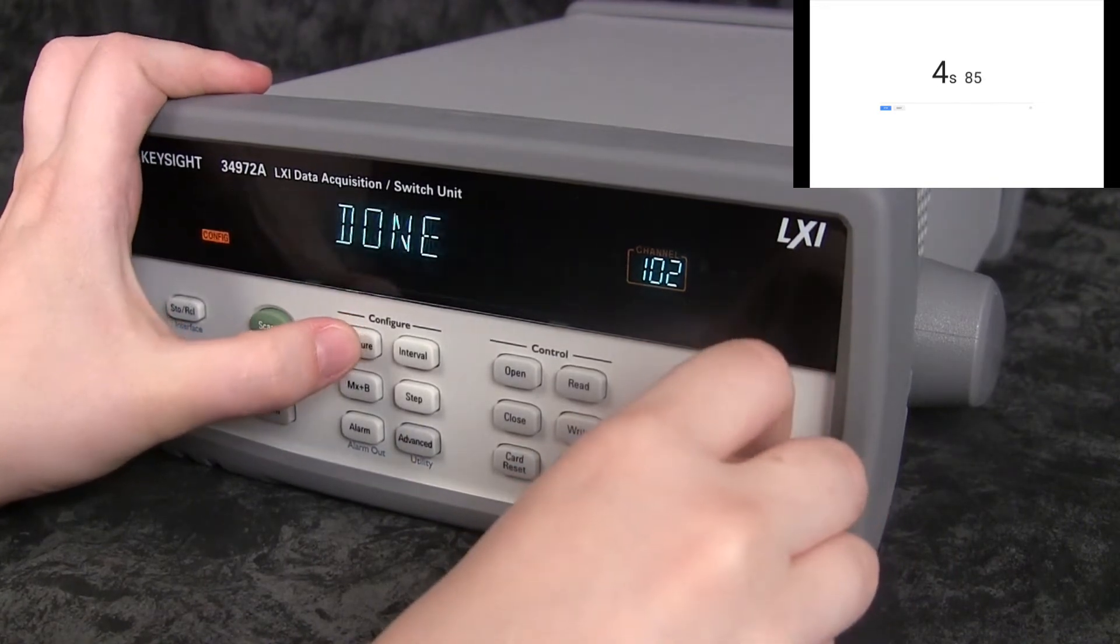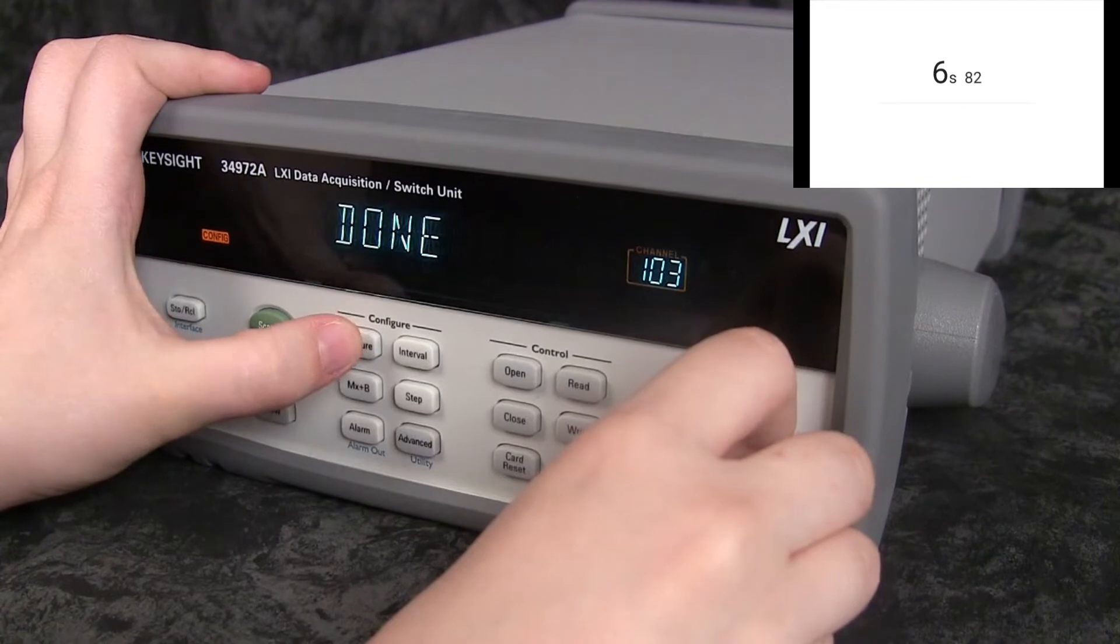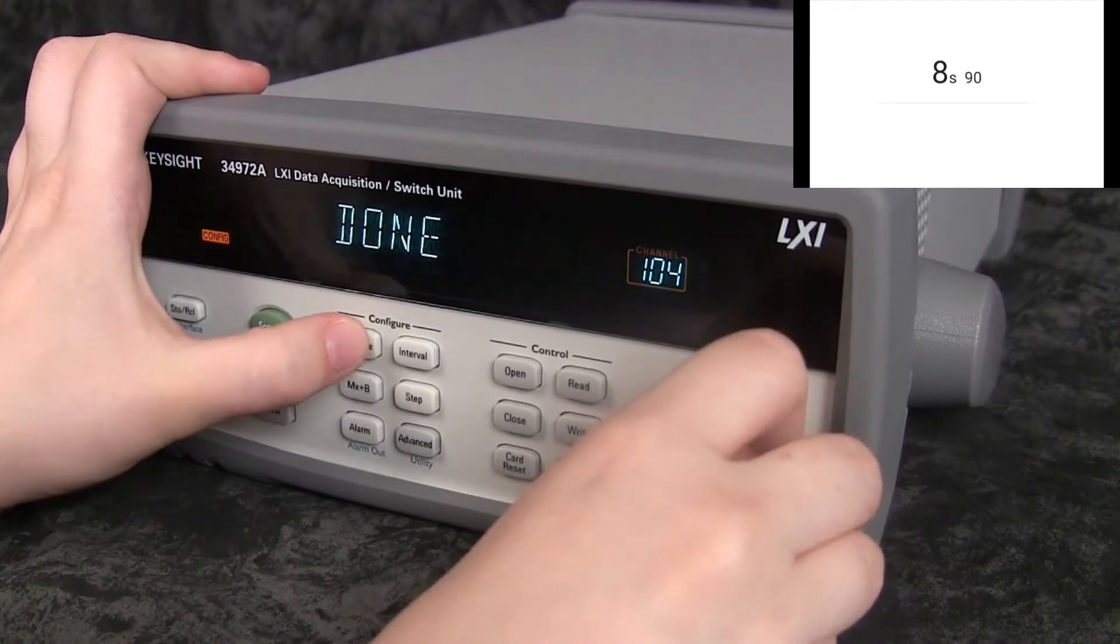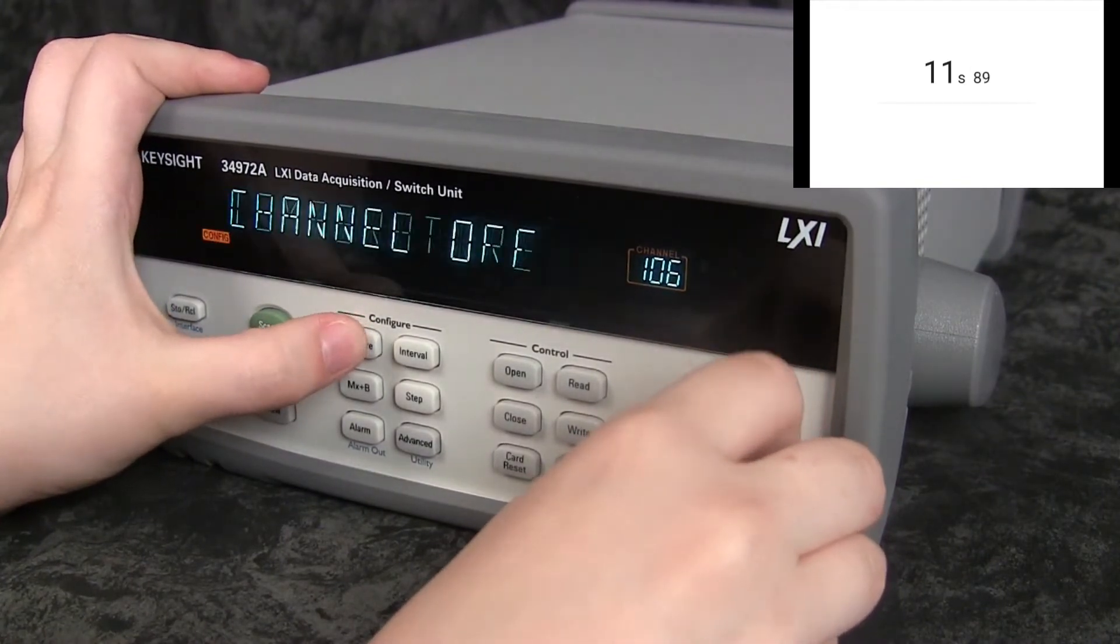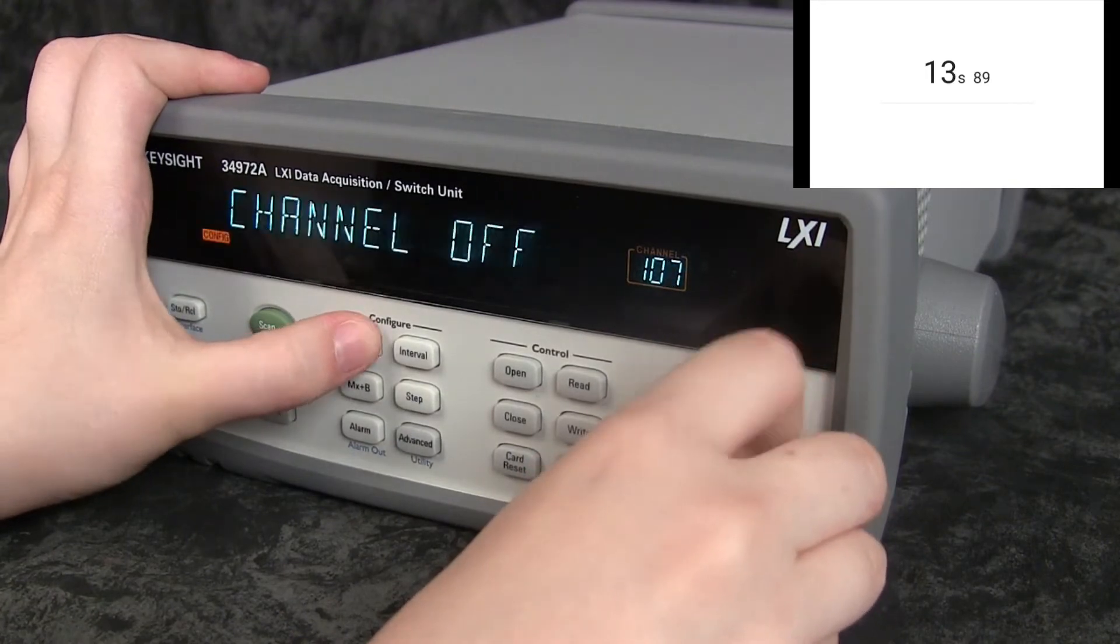Configuring the Keysight 34972A unit requires programming each desired channel one at a time and takes practice to accomplish in under a minute.